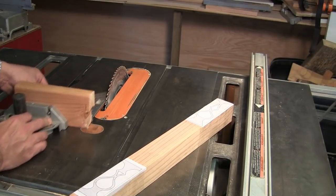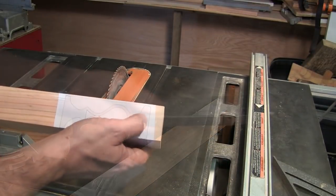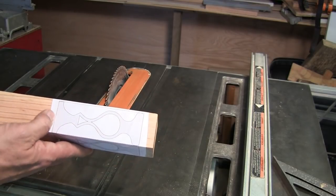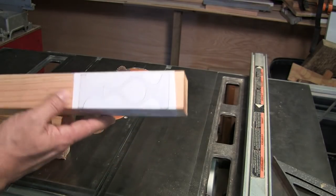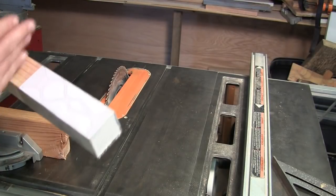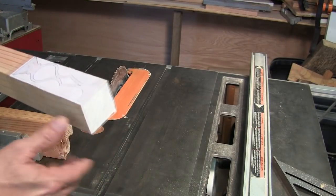Once I know I'm good and squared, I'm going to take the table saw and I'm actually going to cut out for the top and bottom of the candlelight holders. That way I have a nice flat straight cut.